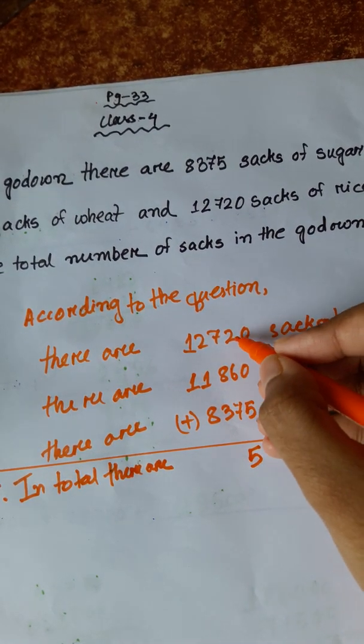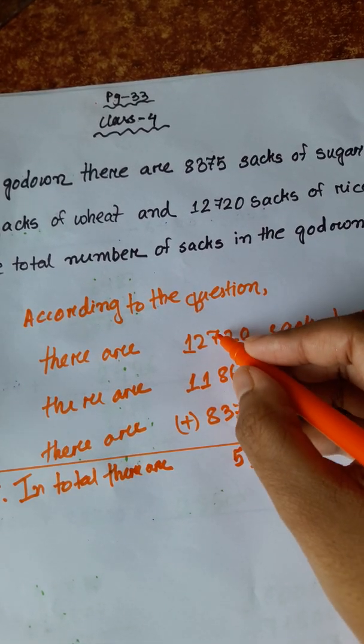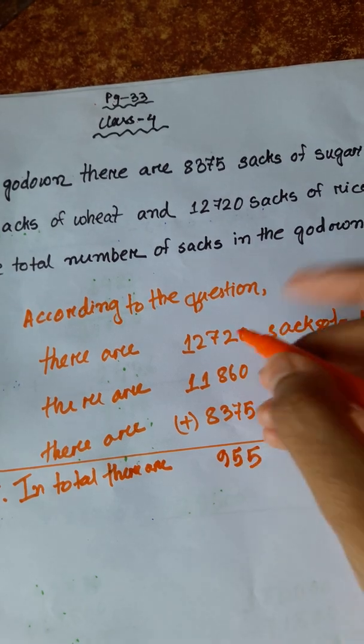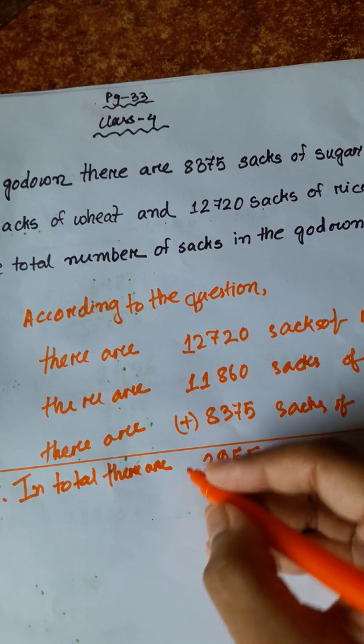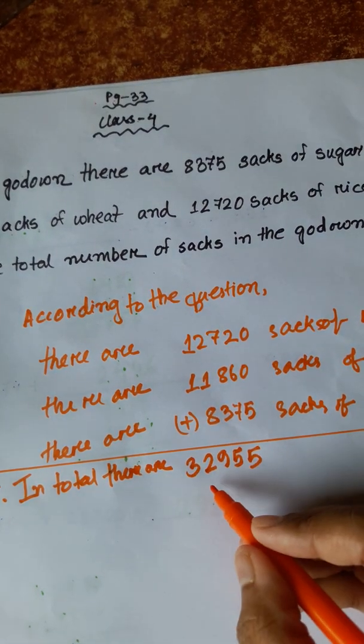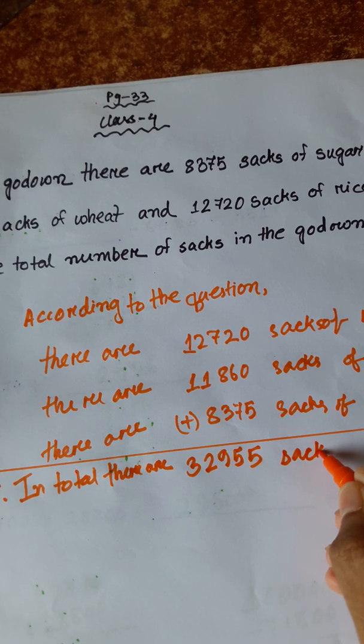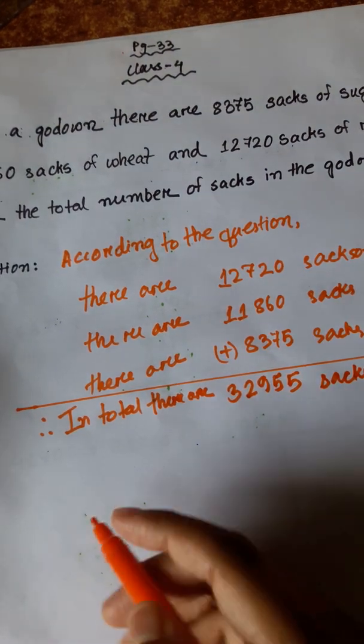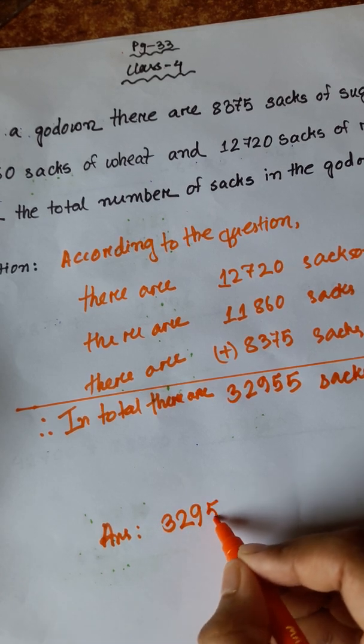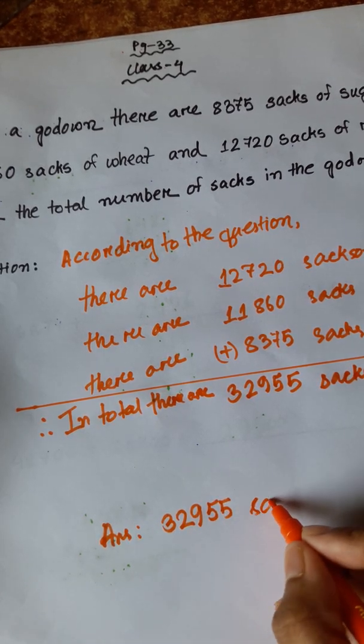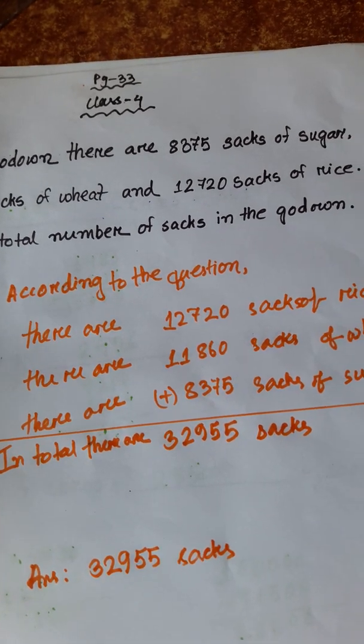5 plus 0 is 5, 7 plus 6 plus 2 is 15, carry 1. 3 plus 8 plus 7 is 18 plus 1 is 19, carry 1. 8 plus 1 plus 1 is 10 plus 2 is 12, carry 1. 1 plus 1 plus 1 is 3. 32,955 sacks. The answer is 32,955 sacks.